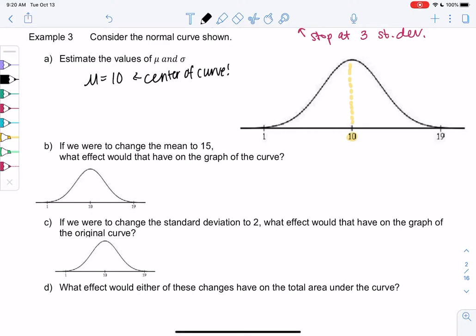Standard deviation is a little trickier, but I know that the flat part is 3 standard deviations. So 19 is 3 standard deviations away from 10. So I would find the difference: 19 minus 10 is 9, and I'm going to divide by 3 because of the 3 standard deviations, which is 3. So sigma is 3.